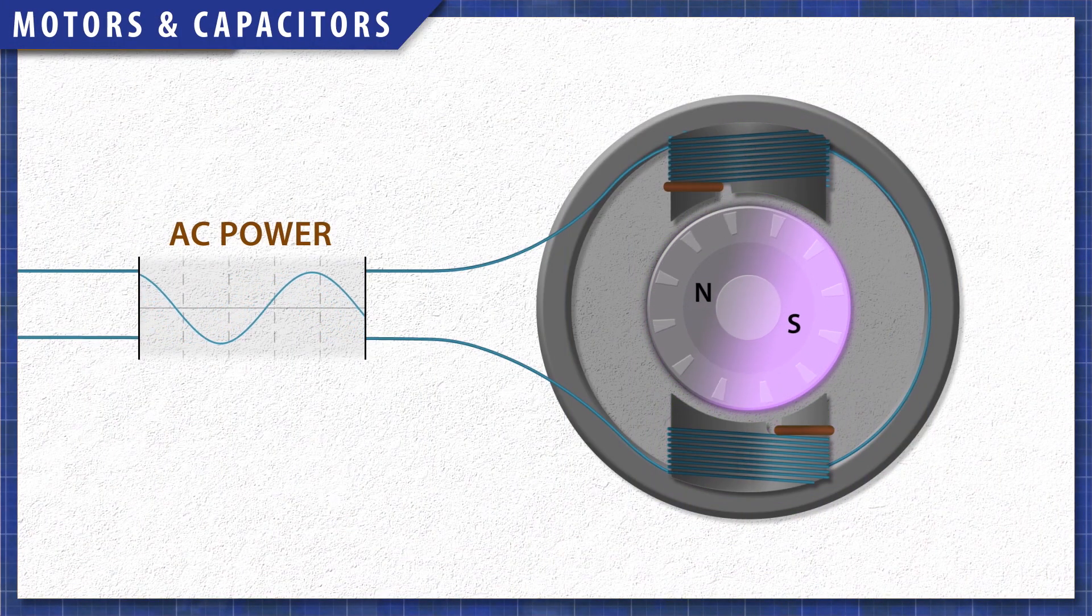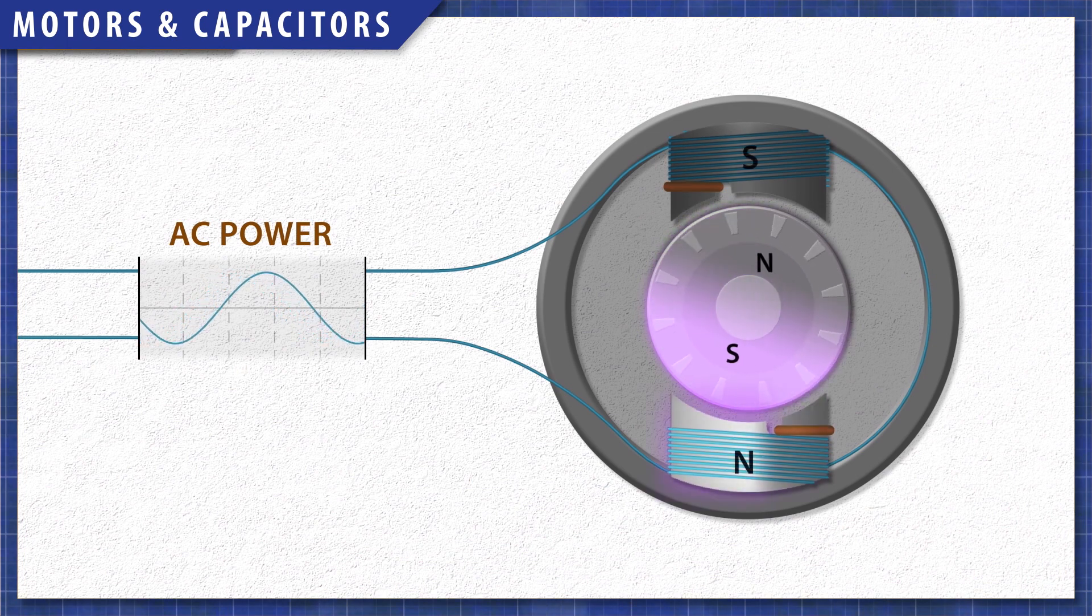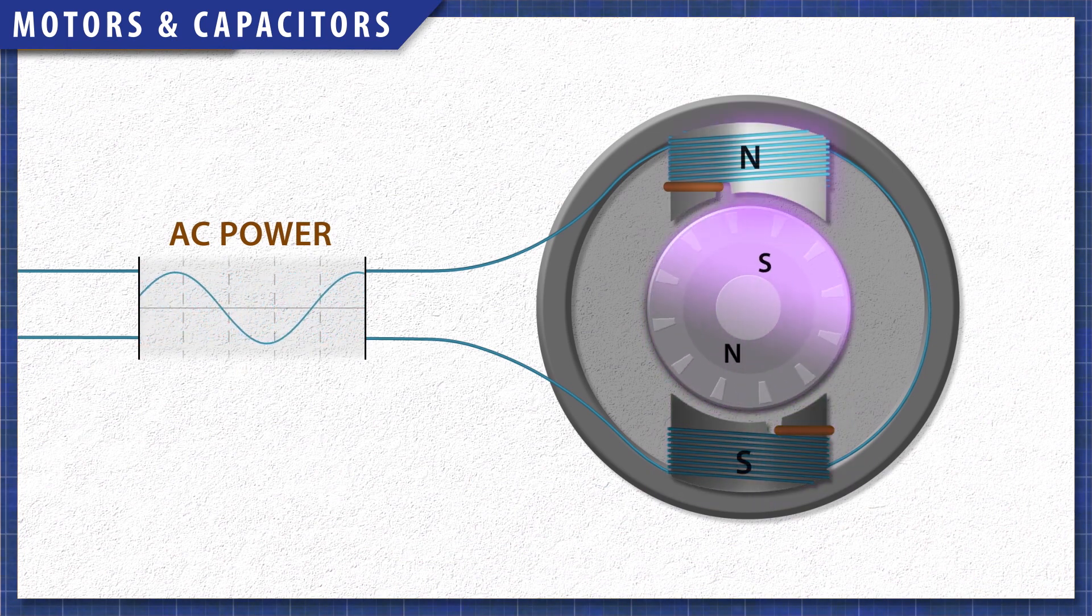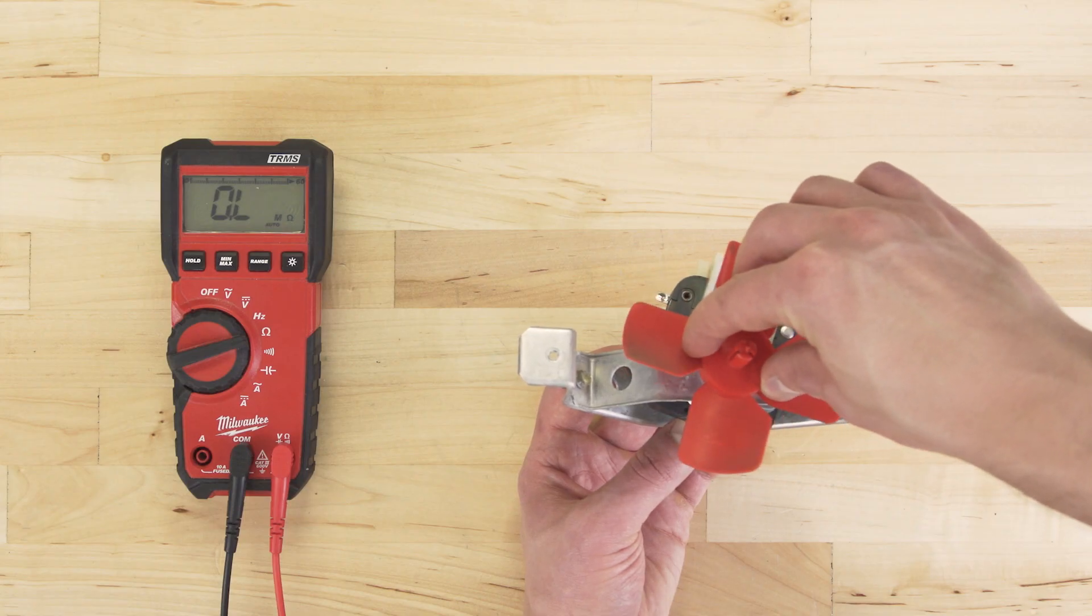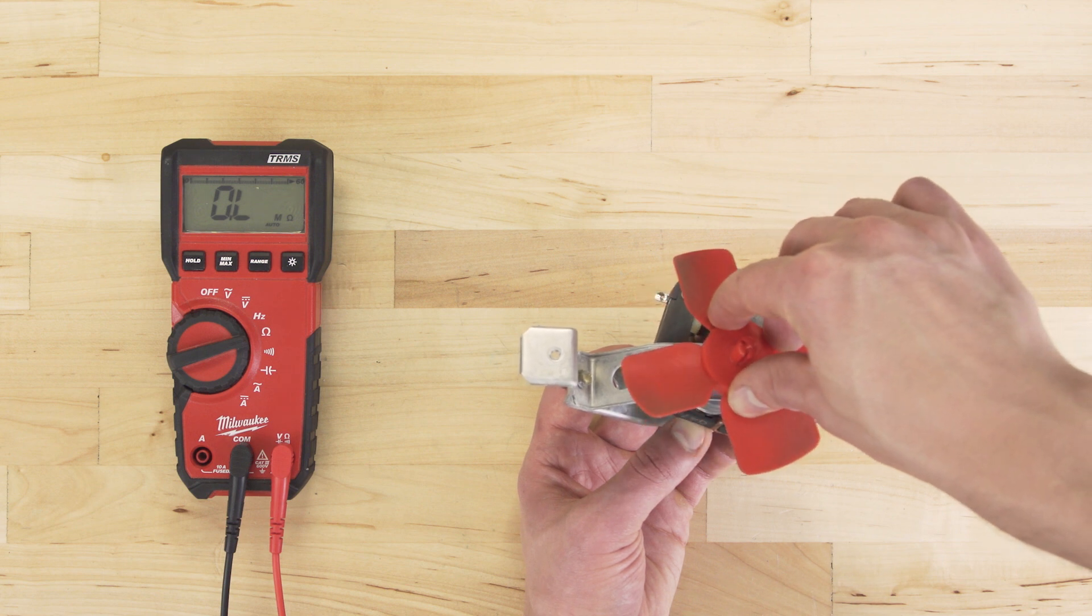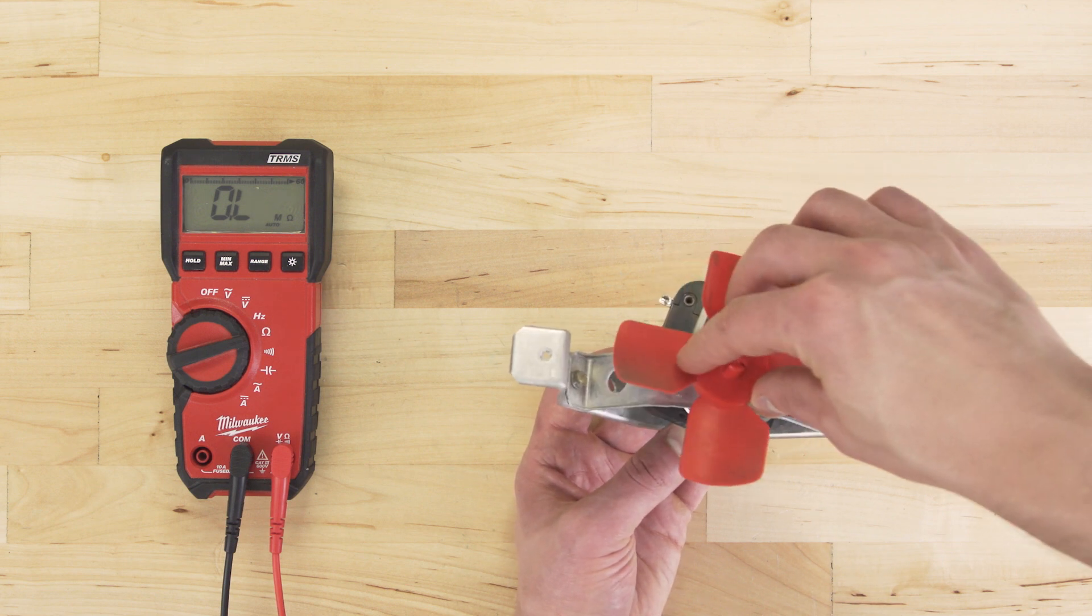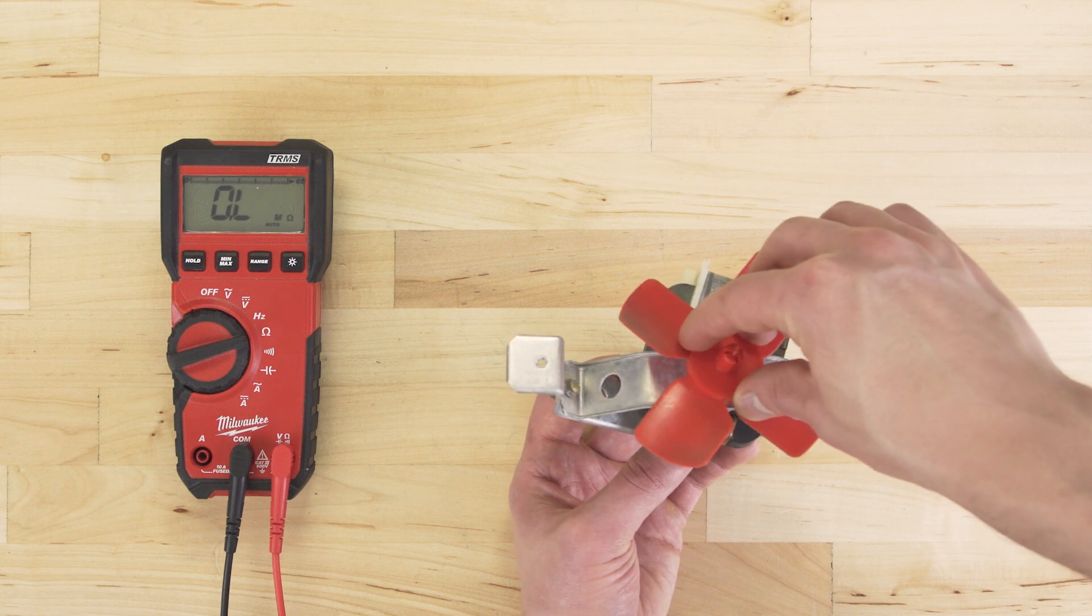Motors use coils of wire to create a rotating magnetic field. If the motor isn't running, first check to see if it's seized up. If the rotor doesn't spin freely, then replace the motor.